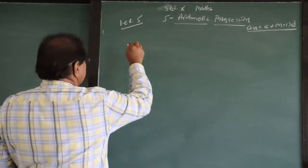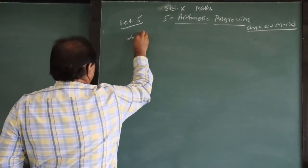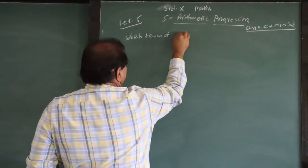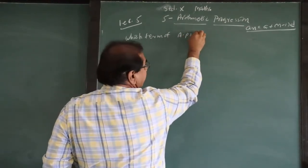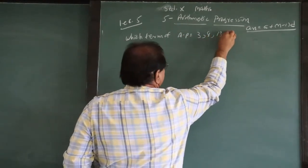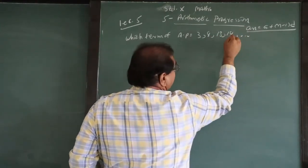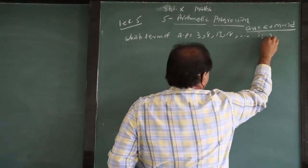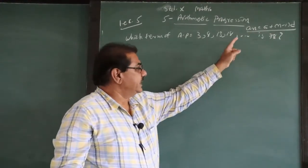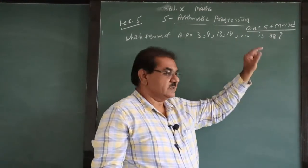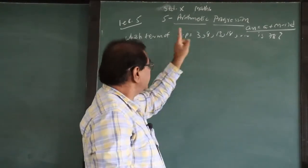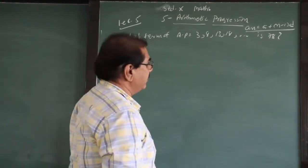The first question is: which term of the AP 3, 8, 13, 18, and so on is 78? So this is an AP, and the nth term given is 78. You want to find out which term number is 78.